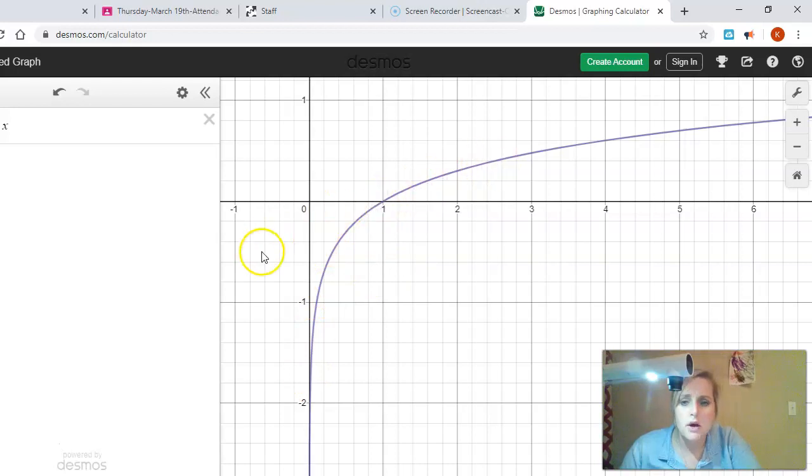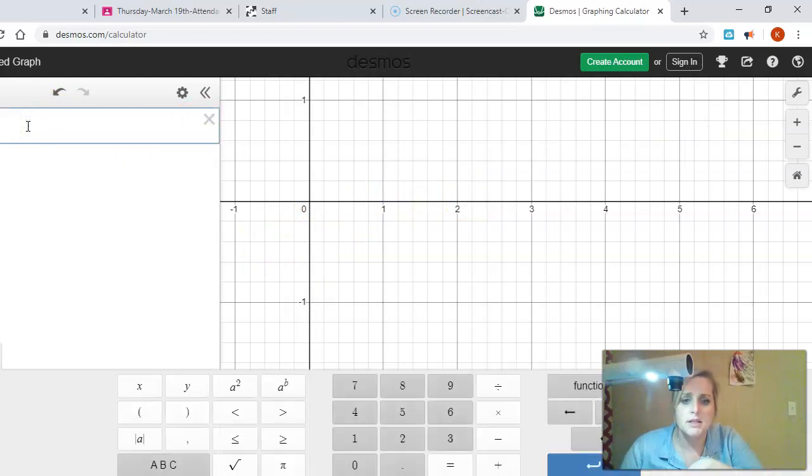So to do this and type this in Desmos, you just click in this first box here. Because it's common log, you can just type log and then space and put your x. So that's going to give you common log.